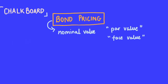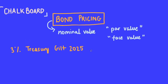The best way to understand this is with a quick example. Let's say there is a 3% Treasury Gilt 2025 — so we are working with UK bonds. Let's say it is priced at £106 and 39 pence. That is the current market price of that bond.